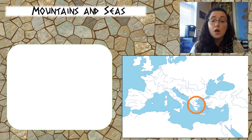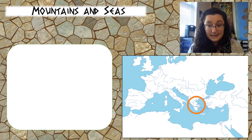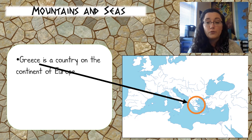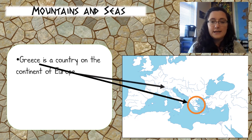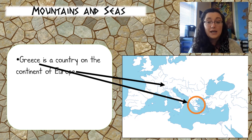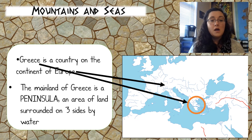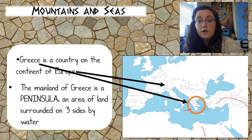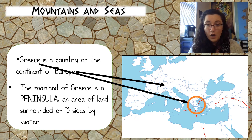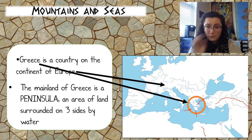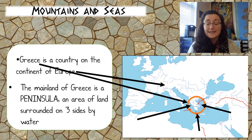We need to start looking at our geography — the mountains and seas in Ancient Greece. Greece is still a modern-day country and it's in the continent of Europe. This is our first civilization we're looking at that's actually in Europe. You'll notice we know where some other civilizations are: Egypt and Mesopotamia. The mainland of Greece is a peninsula — an area of land surrounded on three sides by water. It looks like a little alligator claw reaching into the Mediterranean Sea.